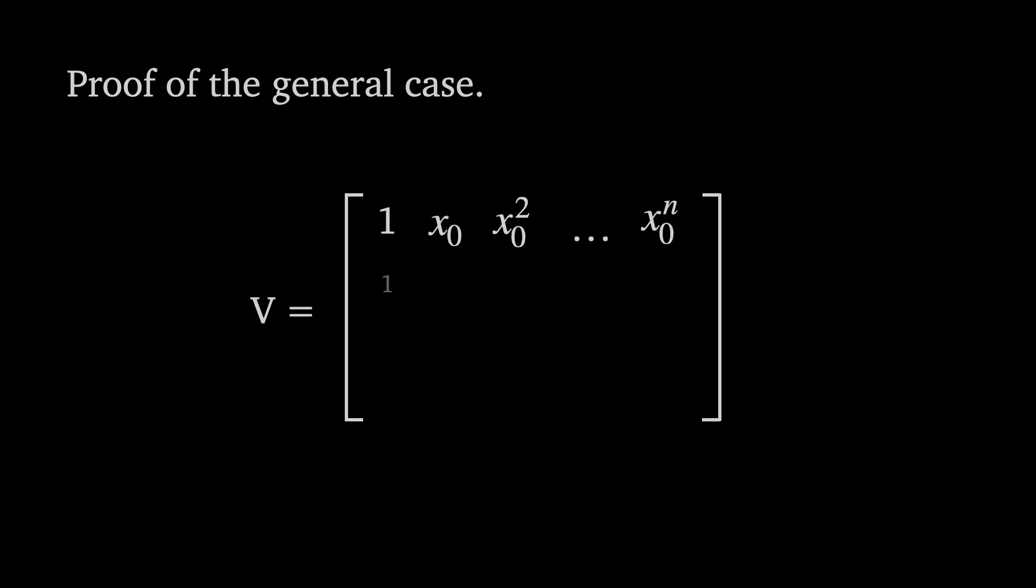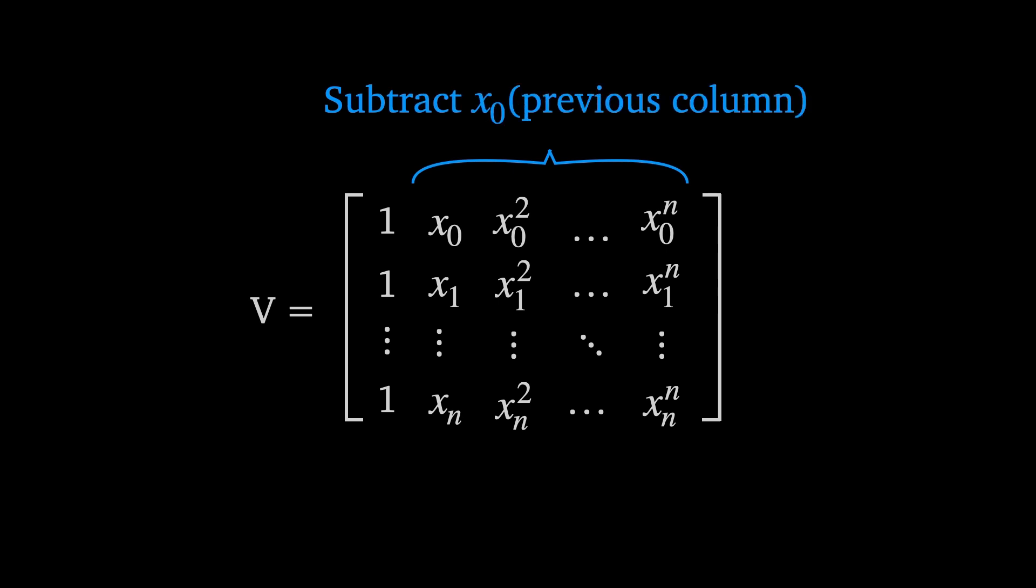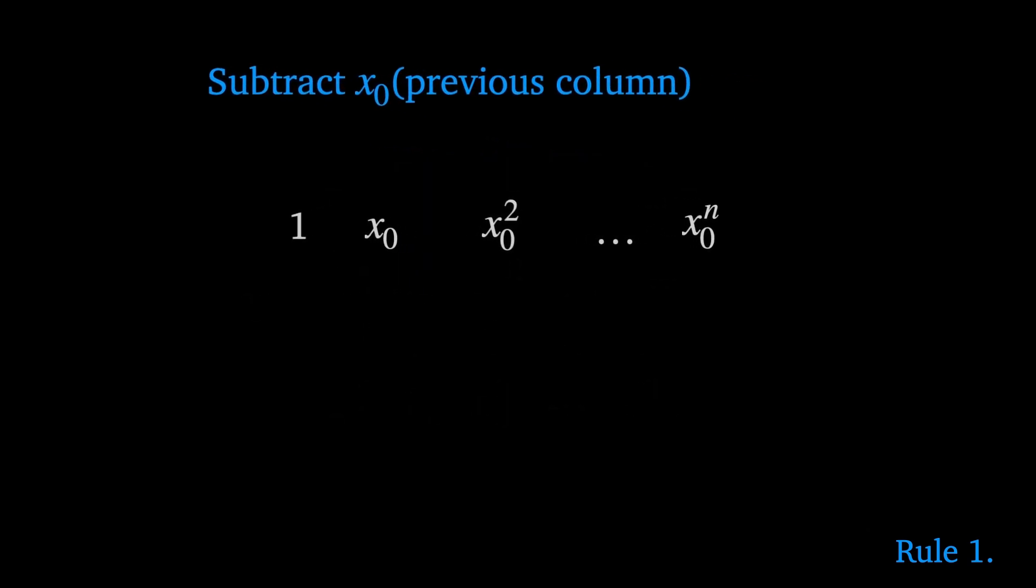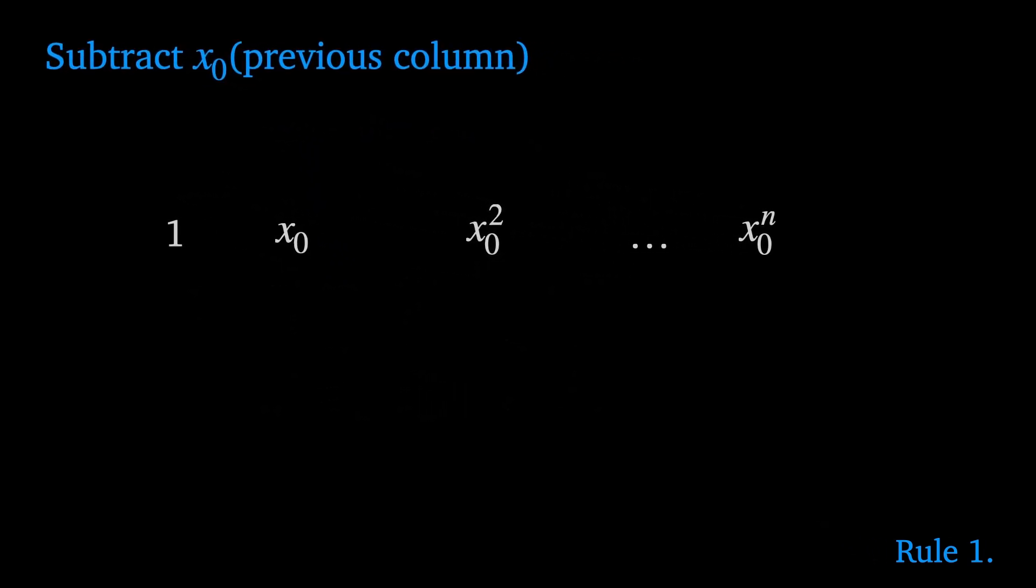For the general case we'll use rule 1 to subtract the scalar x sub 0 times the previous column from each column. We'll start with the first row. We therefore subtract 1 times x sub 0 from the second column to give x sub 0 minus x sub 0. Subtract x sub 0 squared from the next column and so on. Notice each column except the first becomes 0 after this operation.